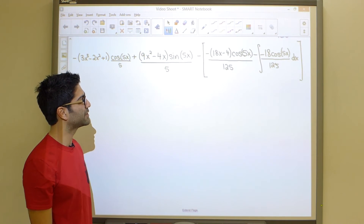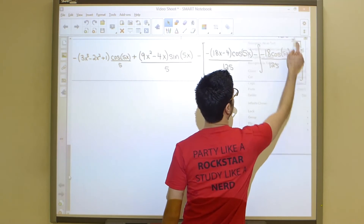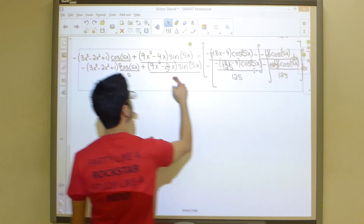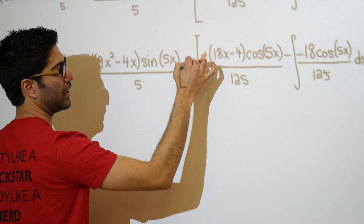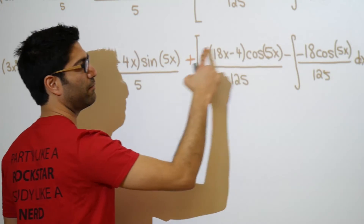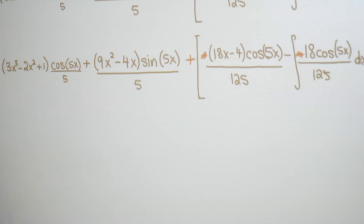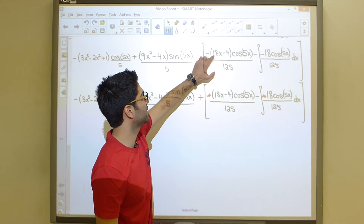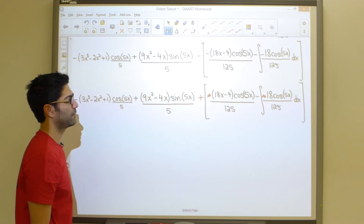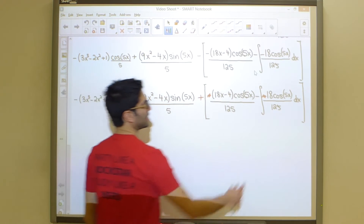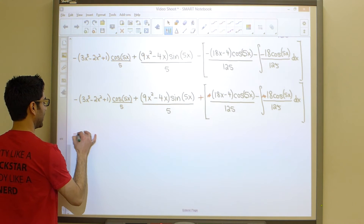We simplify signs before continuing. The minus-minus on the first bracket term cancels to a positive, but the second term inside has three negative signs — an odd number — so it remains negative. From here we can write our final answer because the last integral is just a basic one requiring no special technique.